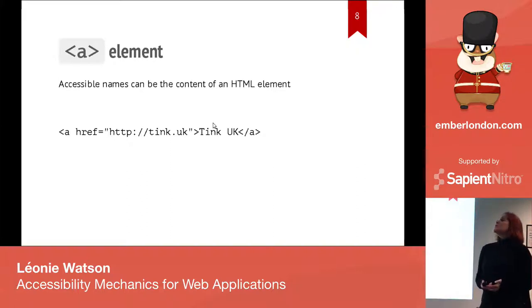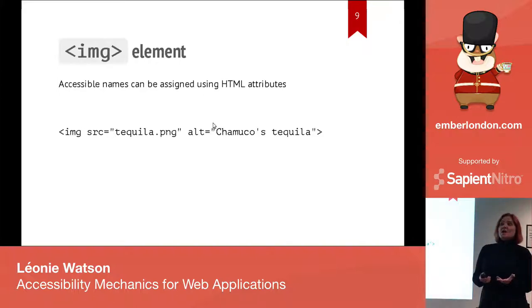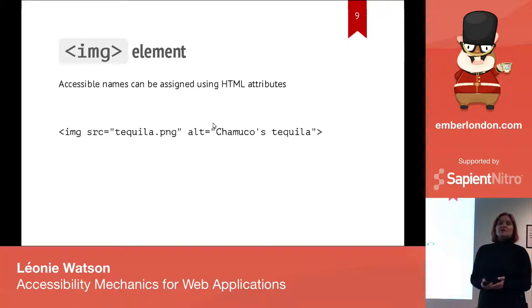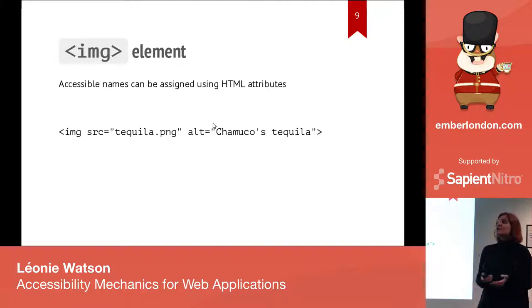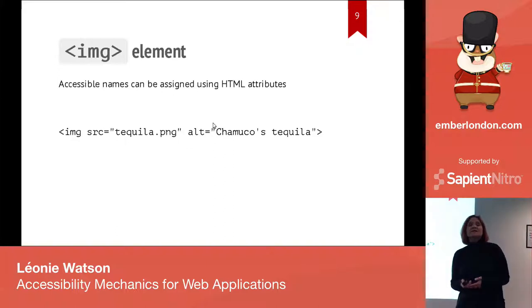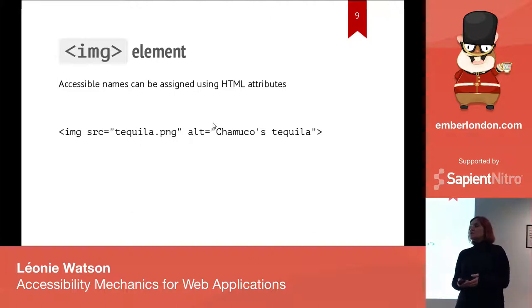If you're a speech recognition user and use voice input, you can use that accessible name to target the link in order to click on it. Accessible names can also come from attributes. If you have an image on the page, using the alt attribute and giving it a sensible text equivalent means that text equivalent becomes the accessible name. A screen reader user knows what differentiates that image from another — in this case, imagine a bottle of tequila with alt text 'Chimucca's tequila.' Other assistive technologies can also identify that image using this information.